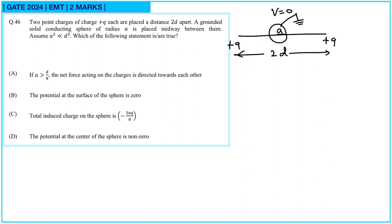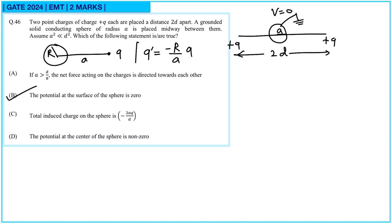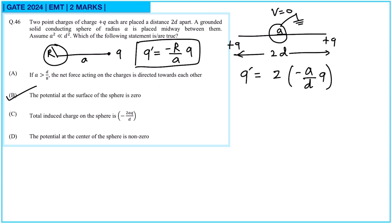We check options one by one. Option B: the potential at the surface of the sphere is 0. Since it is grounded, this is true. So option B is correct. For the total induced charge on the sphere, we use the method of image charges. If the distance from the charge to the center is a, with charge q and sphere radius r, then the induced charge q' is given by minus r by a times q. Here the distance is d and radius is a, so the contribution from each charge is minus a by d times q. With two charges, q' total equals 2 times (minus a by d times q), that is minus 2aq over d. So option C is also correct.